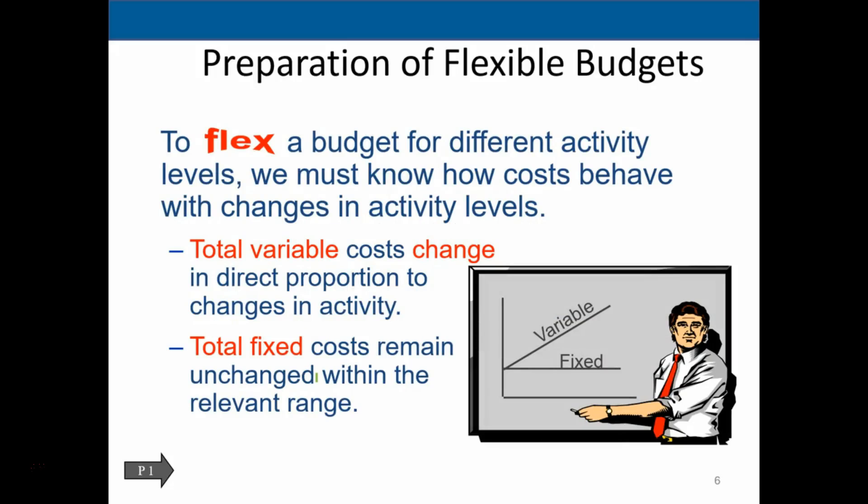To flex a budget for different activity levels, we must know how costs behave with changes in activity levels. We're going to work through the idea of variable costs versus fixed costs — a huge concept in managerial accounting. Sometimes we want to combine both into the product cost; other times we really want to break out the variable portion and the fixed portion so we can analyze them separately based on different budgetary outcomes and production levels.